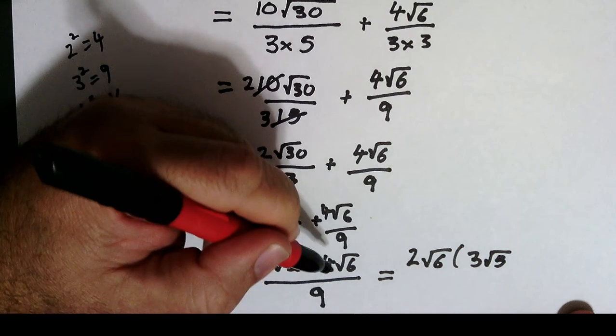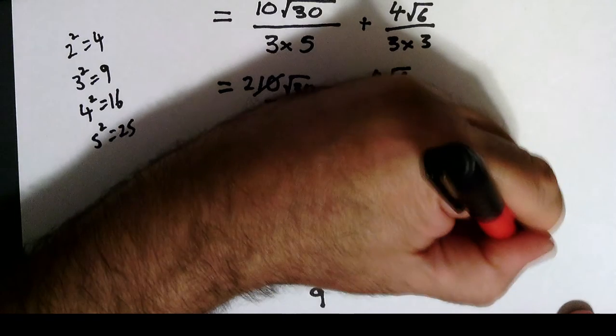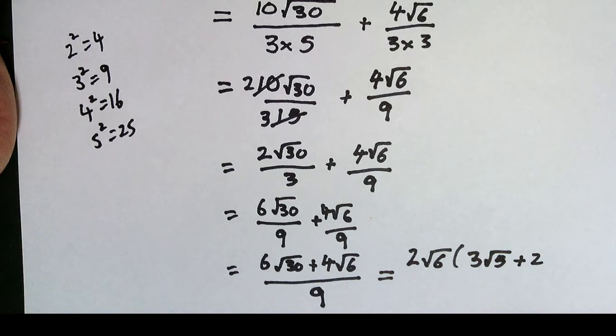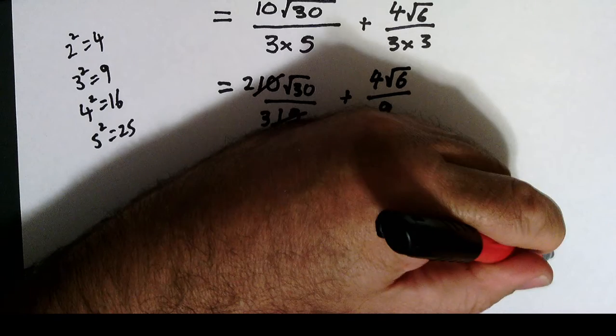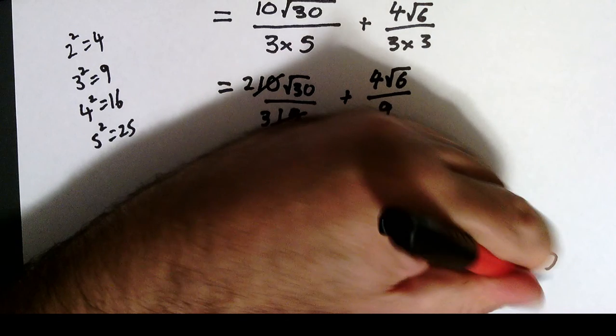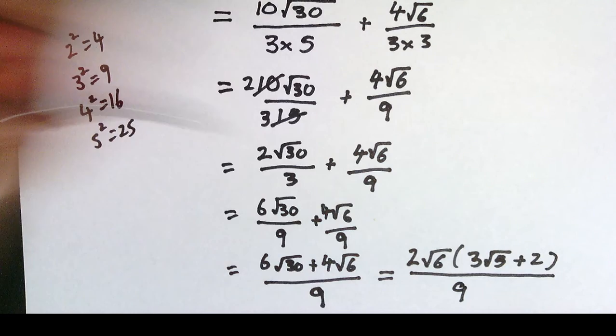If I take a 2 out of 4, I'm left with 2. And if I take a root 6 out of root 6, I'm left with 1. So there's nothing more there. And I've still got my 9 in the bottom.